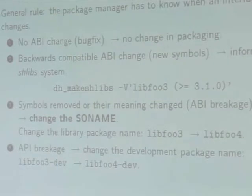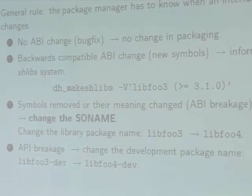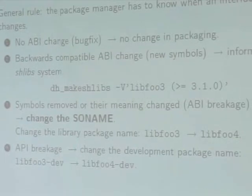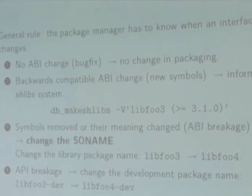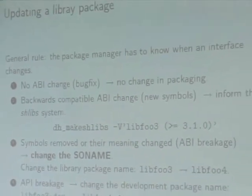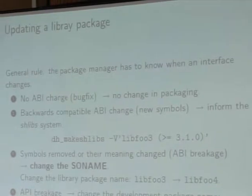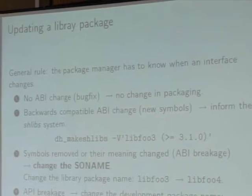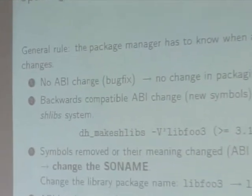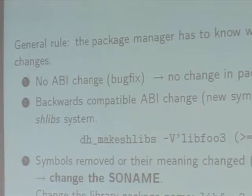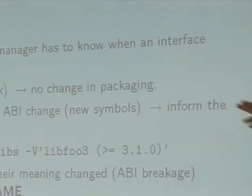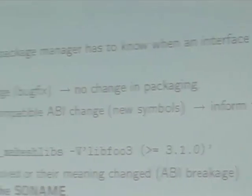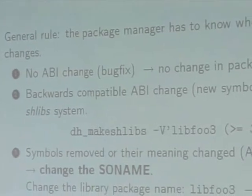When we have packaged our library as described earlier, this is not enough. You then have to make it evolve when upstream provides new versions. The general rule is that the packaging system — which in Debian is dpkg — has to know about what happens, especially about interfaces, because it provides inter-package dependencies that represent interfaces. So if you have a new version that is just a bug fix without ABI changes, there is no change in the packaging — you can go ahead.